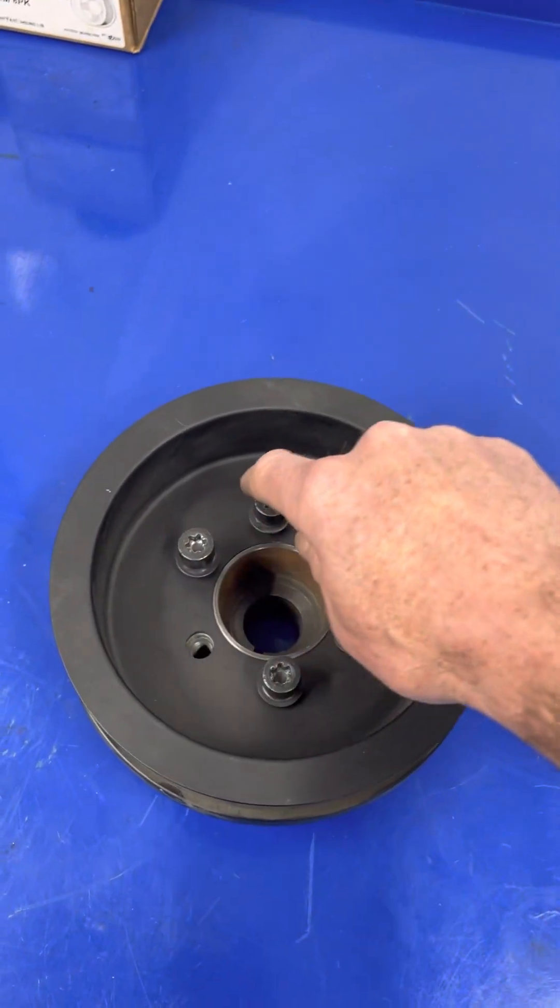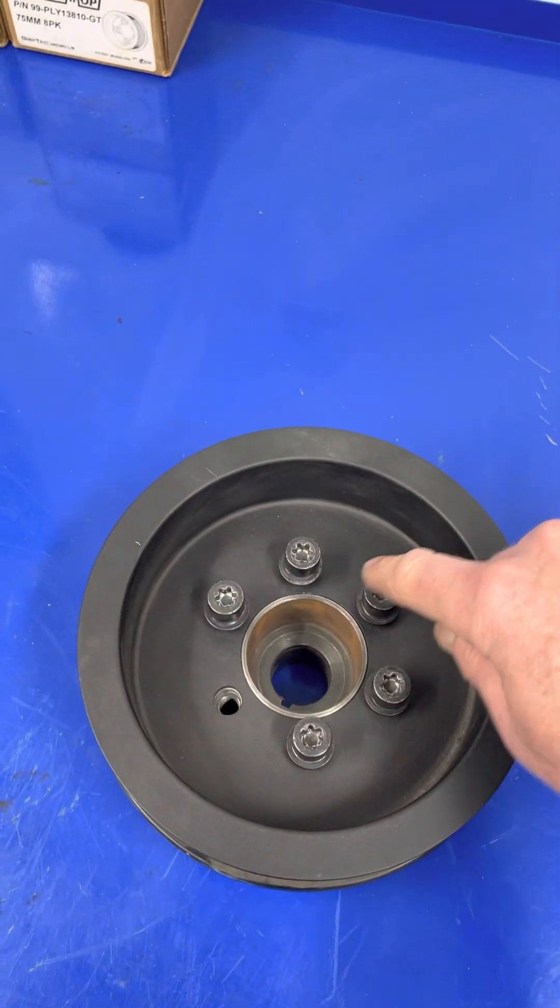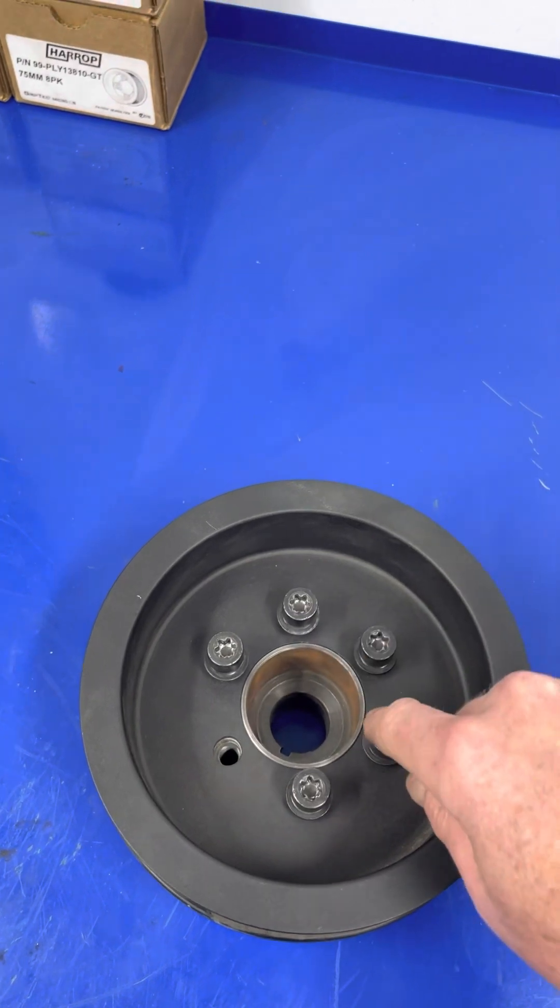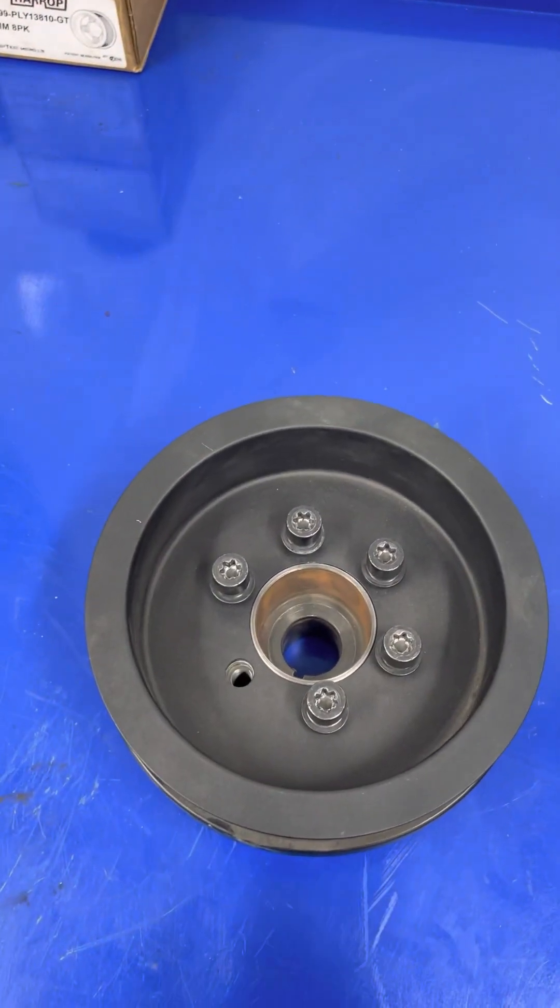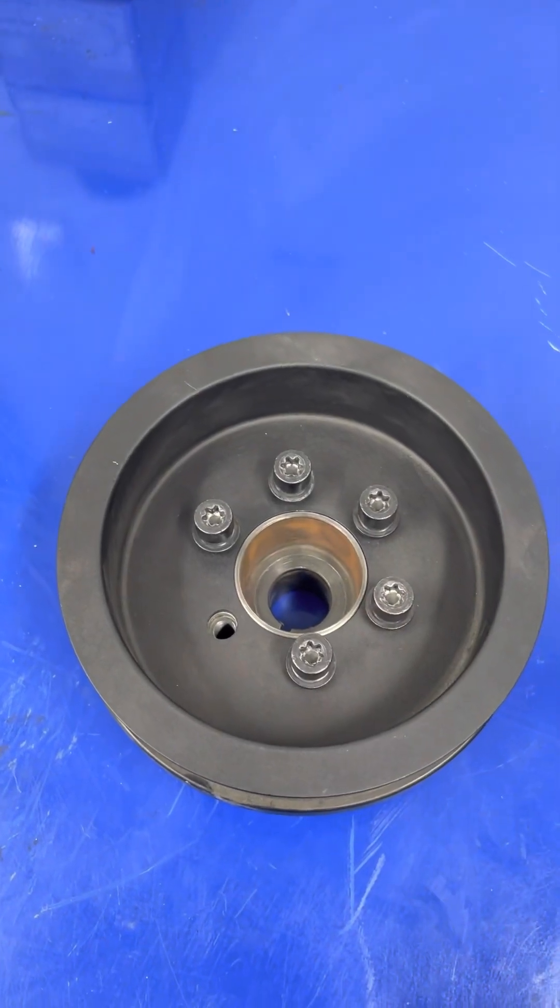...and just go across here in a star pattern and tighten them up a little bit at a time until you get your torque readings correctly. You're going to get this pulley on properly, it's going to be mounted flush against the hub.